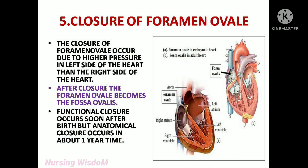The next change is closure of foramen ovale. Before birth in fetal circulation, the right side pressure of the heart is higher than the left side because more blood is coming from the umbilical vein to the right atrium. But after birth, cutting the cord means blood flow to the right atrium will be low, so right atrium pressure is low.